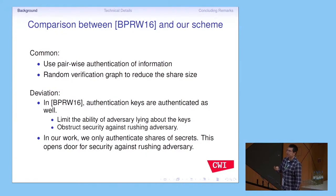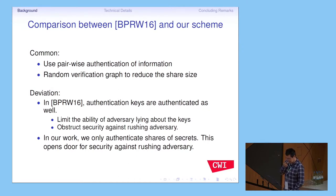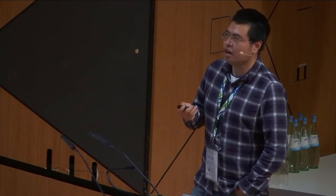Let's compare the differences between our scheme and the Eurocrypt 2016 paper. We borrow some ideas from their paper. Two things are the same: first, we consider pairwise authentication, so each party not only holds a share of the secret but also does some verification for other parties, making sure other parties are not corrupted. If a party is corrupted and you are honest, you can detect the corruption. However, if you verify all other parties, the share size grows to O(N^2), which is too big. So we use a random verification graph to reduce the share size.